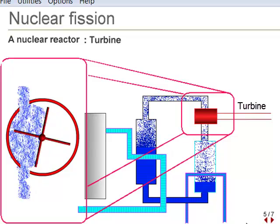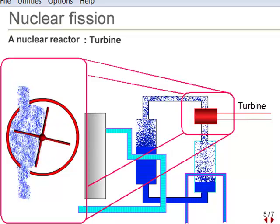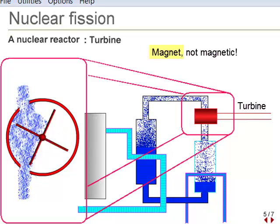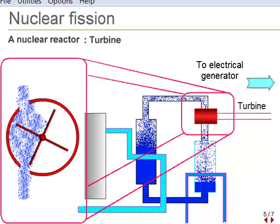In the turbine, steam is forced through a chamber where it rotates a propeller-like arrangement connected to a rotating shaft. This shaft turns a magnet which is in a coil of wire, and thereby produces an electric current in the wire.